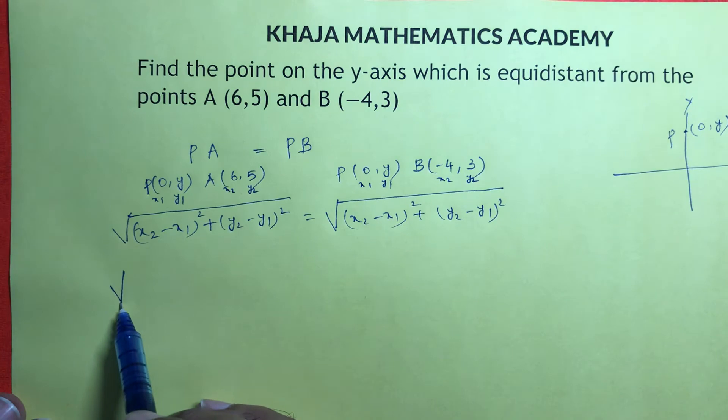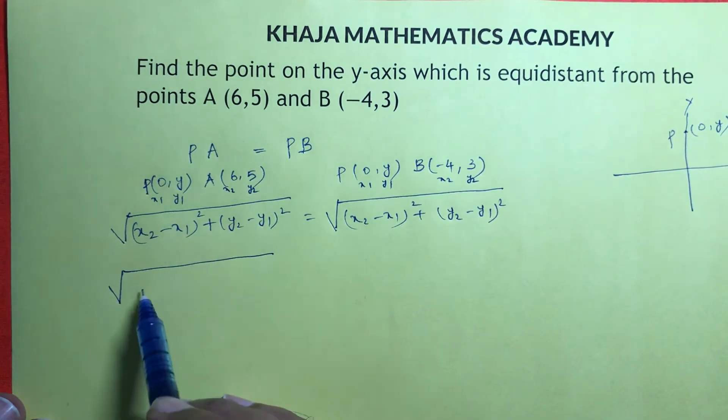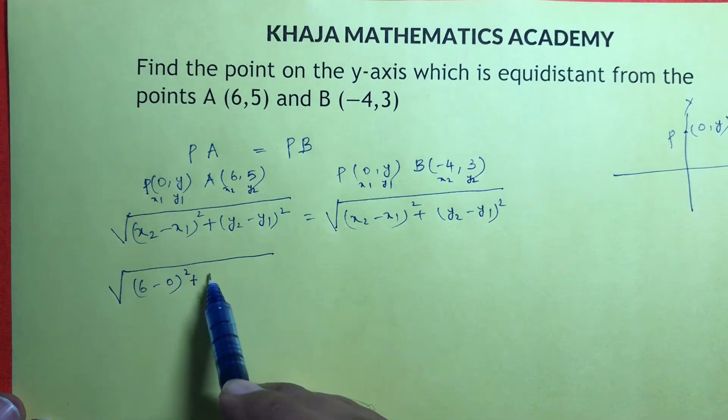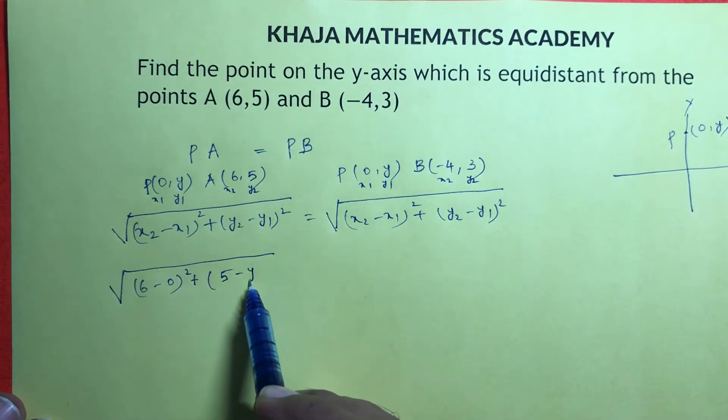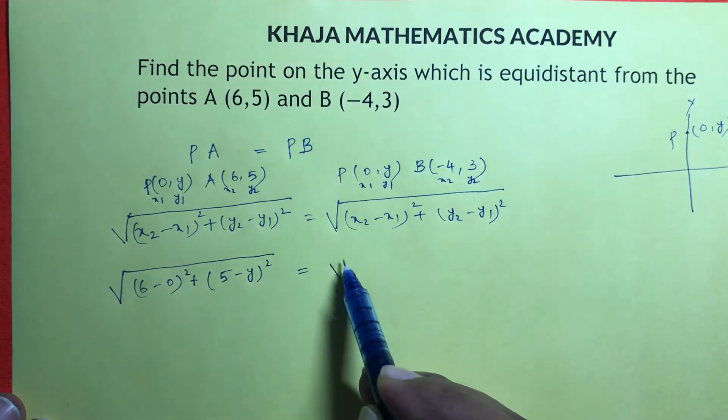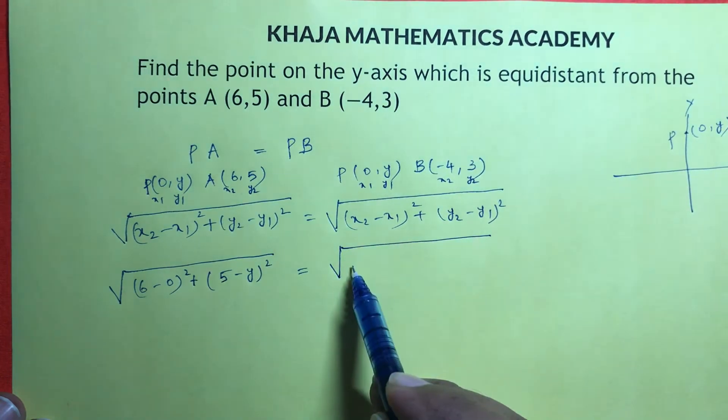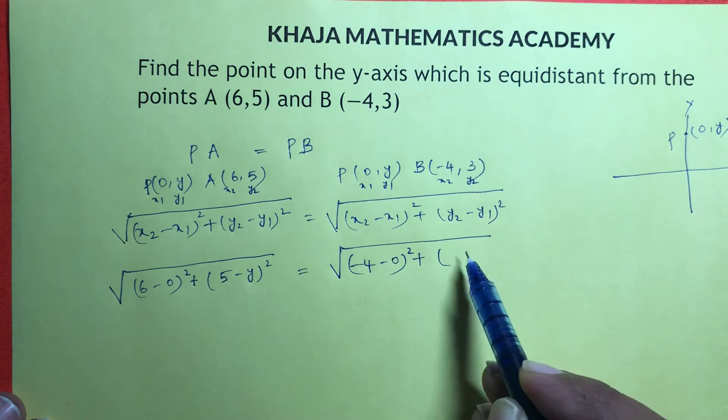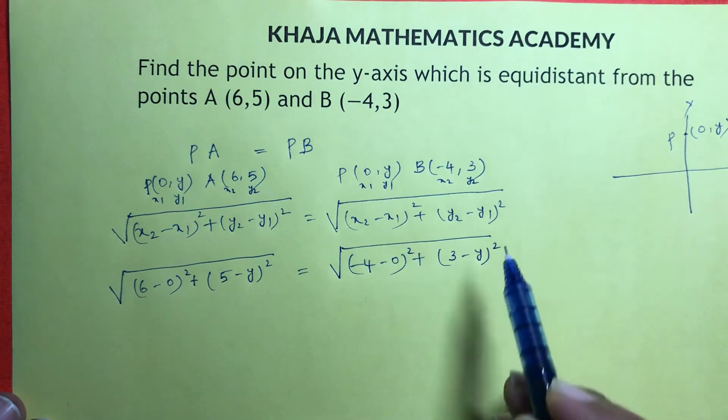Now if we substitute the values: (6 - 0)² + (5 - y)² = (-4 - 0)² + (3 - y)².